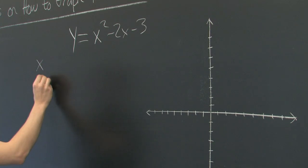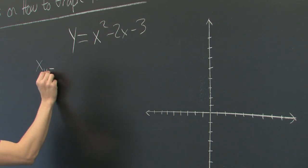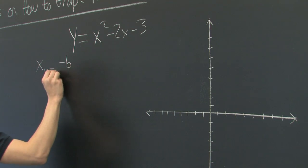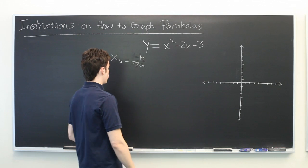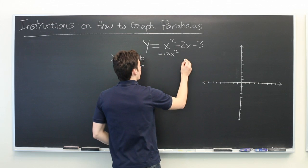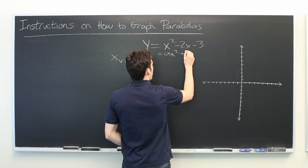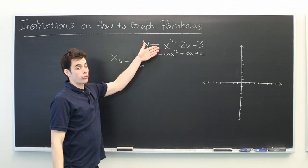We can find the x coordinate of the vertex, which I'll call x sub v, with the formula negative b over 2a. We're assuming that our equation is written in the form y equals ax squared plus bx plus c, which it already is.